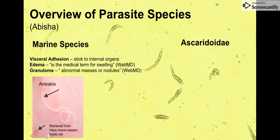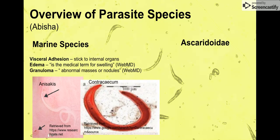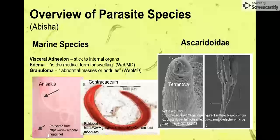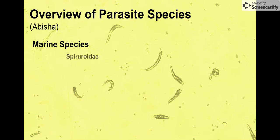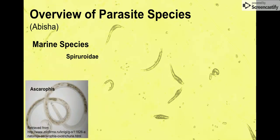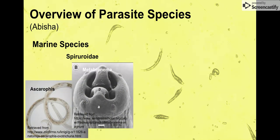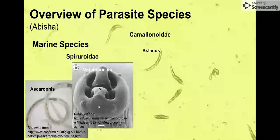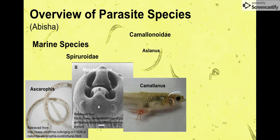The first group is Ascaridida, which includes Anisakis, Contracaecum, and Terranova. The second group is Spiruronidae, which includes Ascaridophus. The third is the order Camallanidae, which includes Aslanus — I couldn't find a picture of that one — and there are also marine species of Camallanidae, including our Camallanus, the one we just talked about with the guppy.